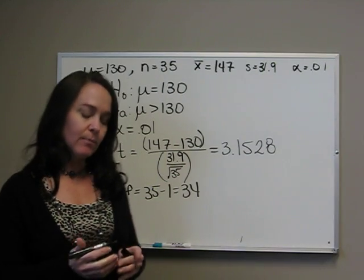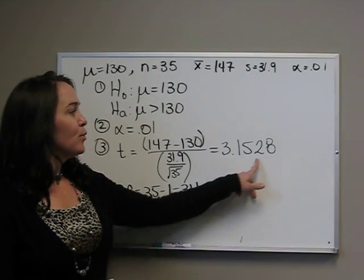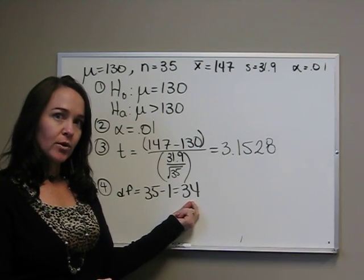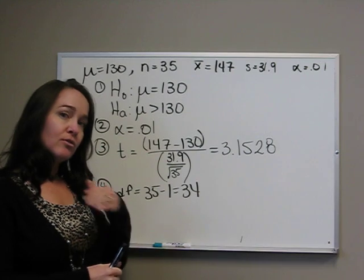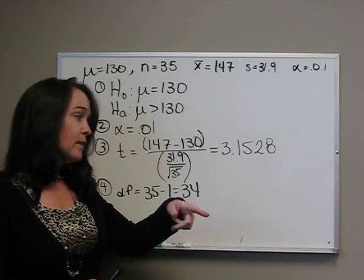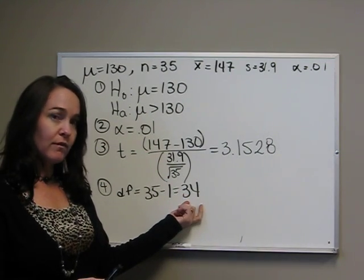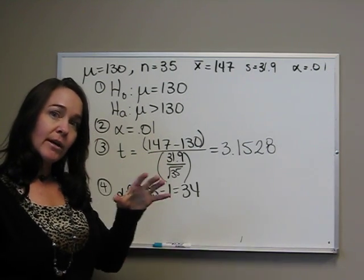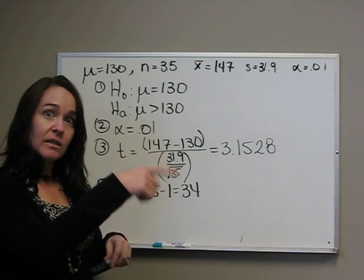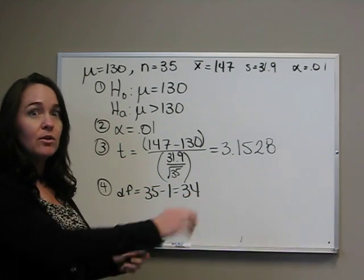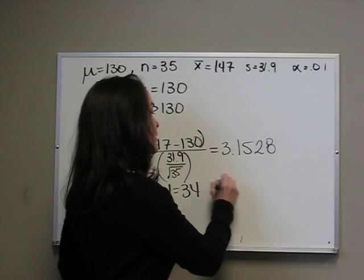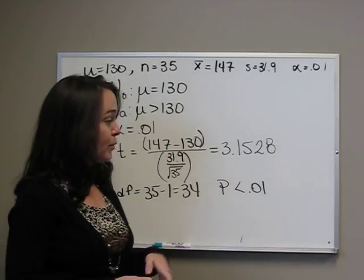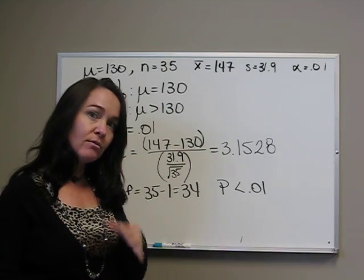If we look at our t-table, what we're trying to find is 3.1528 with degrees of freedom of 34. Looking down that row of numbers on degrees of freedom of 34, you're not going to see this, because this is a large number. But if you look up at your area, we can see that the area is decreasing as the t-scores increase. So, all we know is that our p-value is less than the smallest one we have, which is .01. So, we know that for certain.